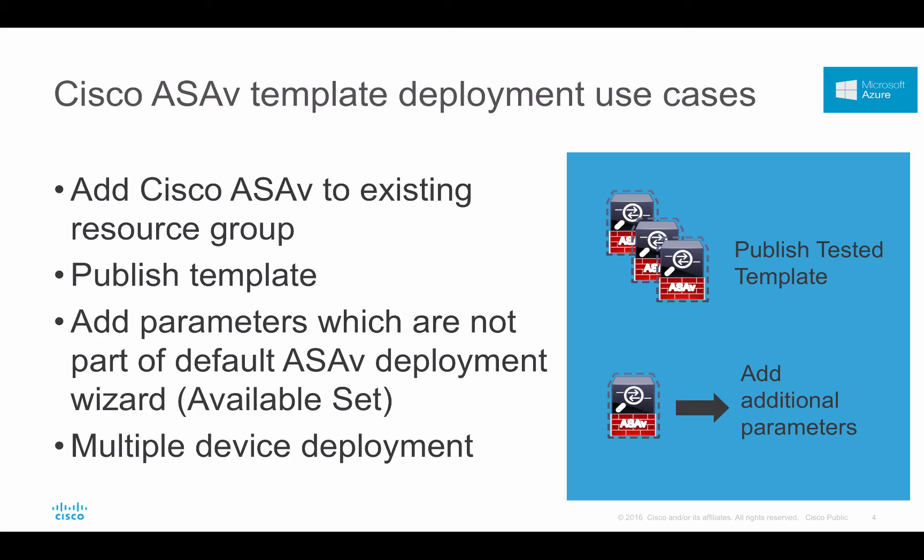When I talk about availability set, it is the attribute which is required if you place ASA devices behind a load balancer. For example, if you want to place two ASAs behind a load balancer, both of those ASAs should be part of the same availability set.